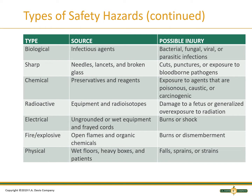This chart covers the different types of hazards. A biological hazard is an infectious agent such as bacteria, fungal, viral, or parasitic that can cause infection. A sharp hazard is something such as needles, lancets, or broken glass that can cause cuts, punctures, or exposure to bloodborne pathogens.